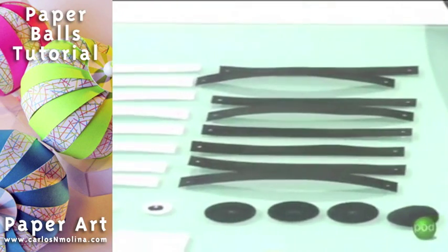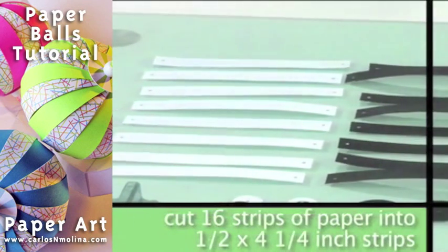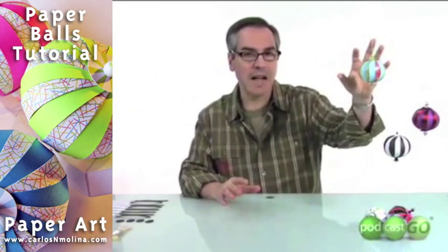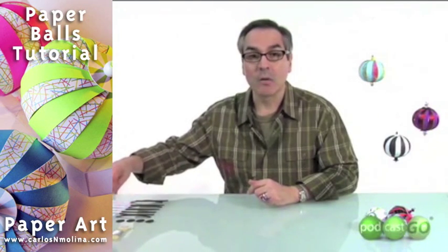To start making the ball or the ornament, you need 16 strips of paper. I have them already cut. They are half an inch by four and a quarter. That is very important that you stay with these measurements so that you could have something as solid as this. The measurements are half an inch by four and a quarter inch.